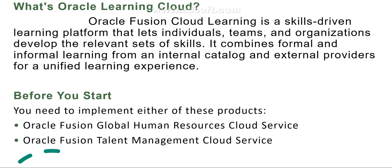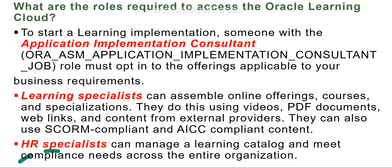Before we start, we need to implement either Global Human Resource Cloud Service or Oracle Fusion Talent Management Cloud Service. To start a learning implementation, someone with the Application Implementation Consultant role must opt into the offerings. You also need the mandatory role called Learning Specialist, which can assemble online offerings, courses, and specializations using videos, PDFs, web links, external providers, and SCORM-compliant content to manage the learning catalog and meet compliance needs.